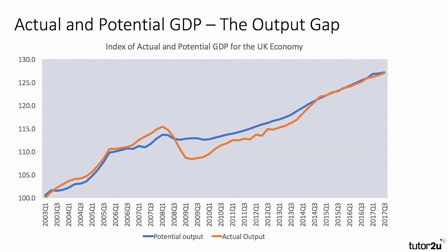The output gap is a key macroeconomic measure. It's the difference between the actual level of economic output — the actual level of real GDP shown in this chart in orange, expressed as an index — and what could be achieved if the economy was operating at full potential output, indicated by the blue line on this chart.